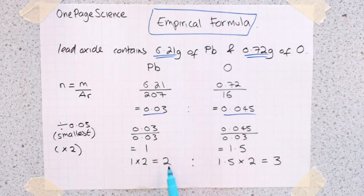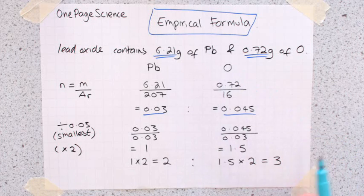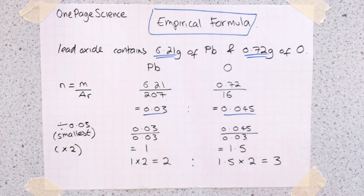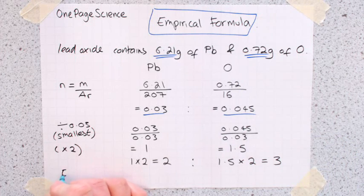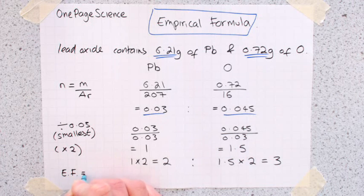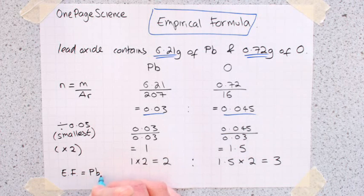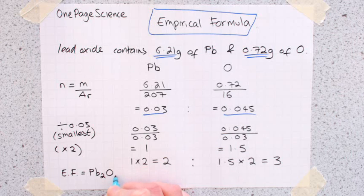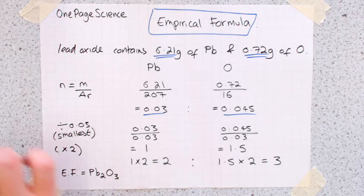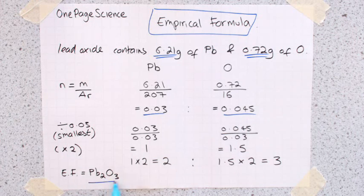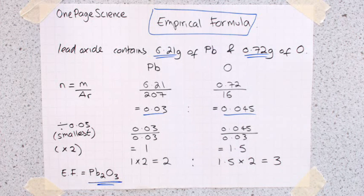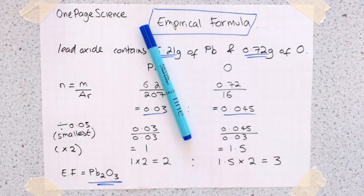So that means that in this compound, there's two leads for every three oxygens. So the last thing to do then is to write the actual formula. So the empirical formula equals Pb2O3. And that then is your final answer. So that's calculations involving empirical formulas. Done.